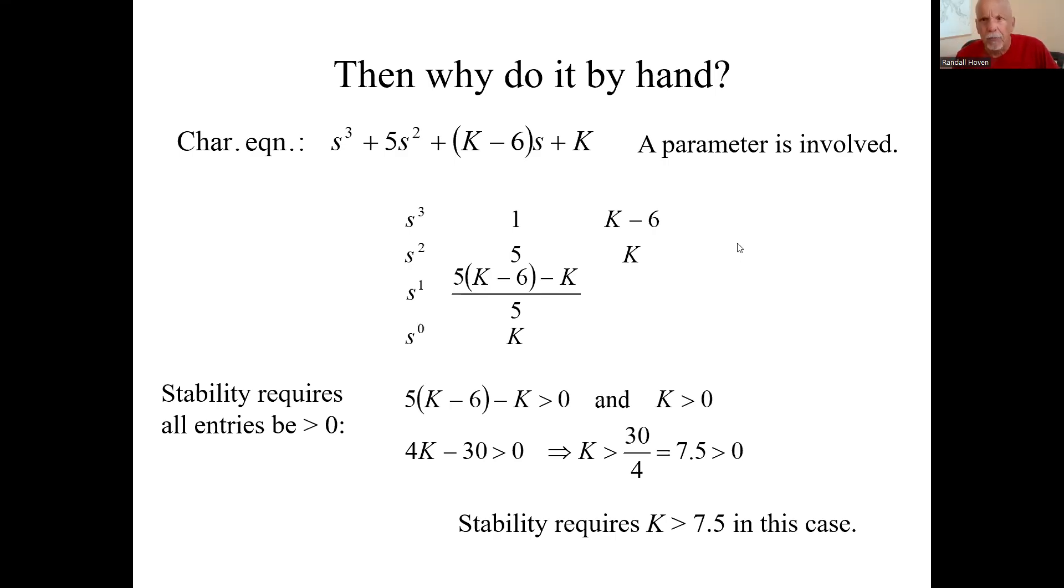In the previous video, we did stability analysis on a transfer function with this characteristic equation and the parameter K. We set up the Routh array and looked at this first column and determined what K's were required so we get all positive entries in this first column here. Certainly K had to be greater than zero and the algebra on this guy said it had to be greater than 7.5.